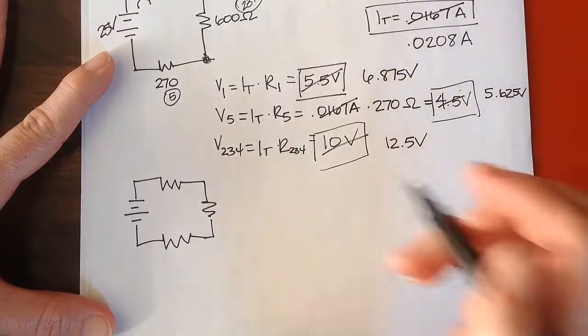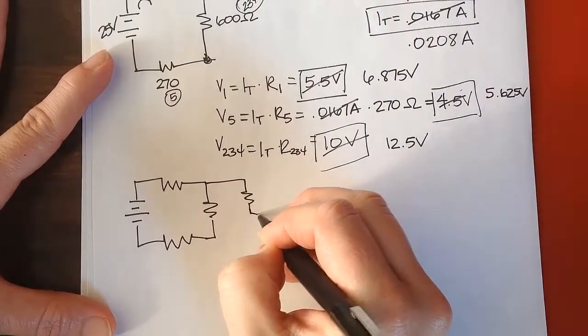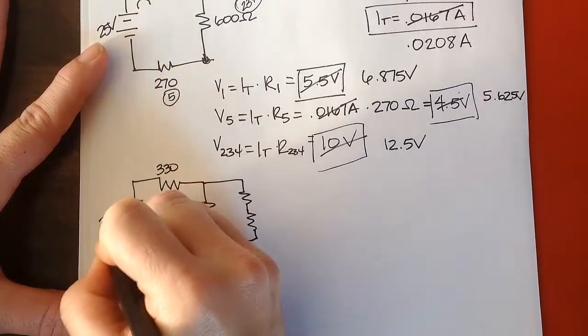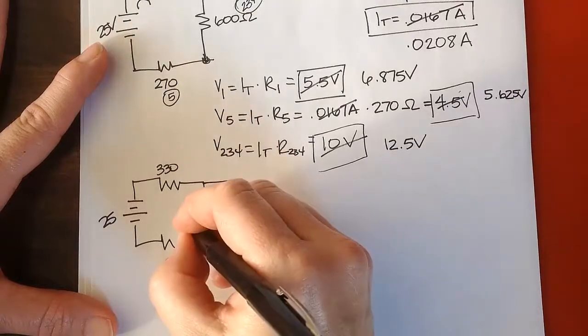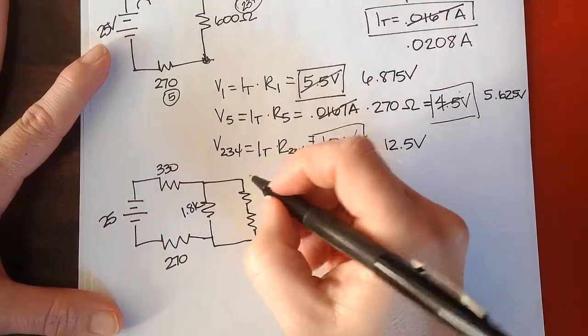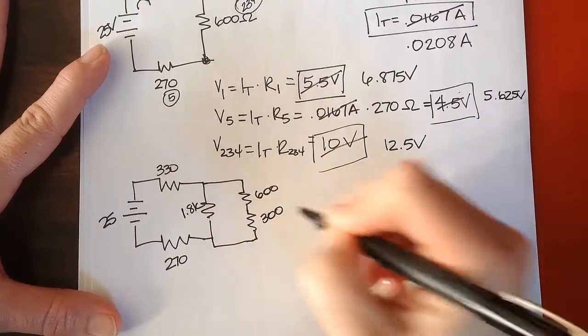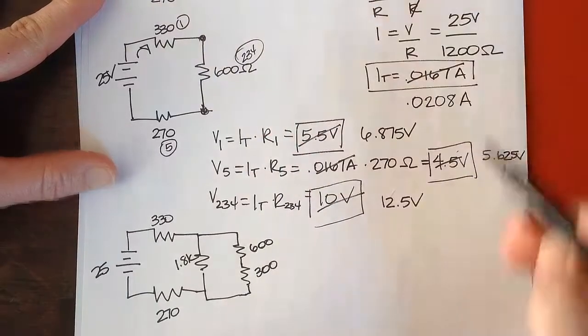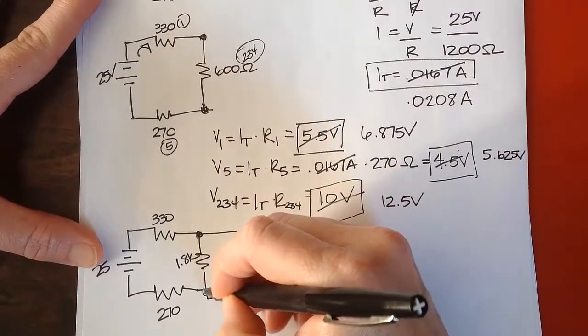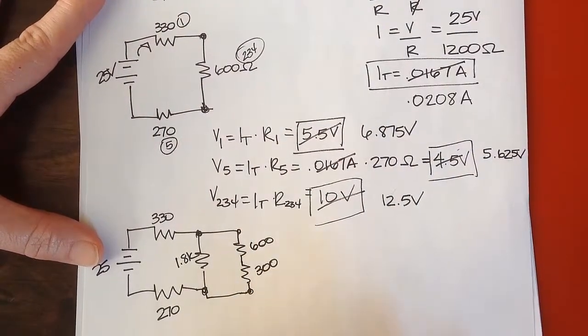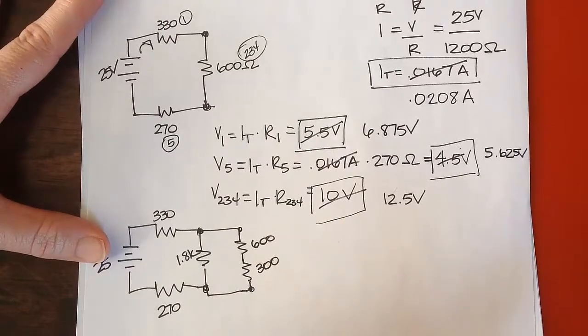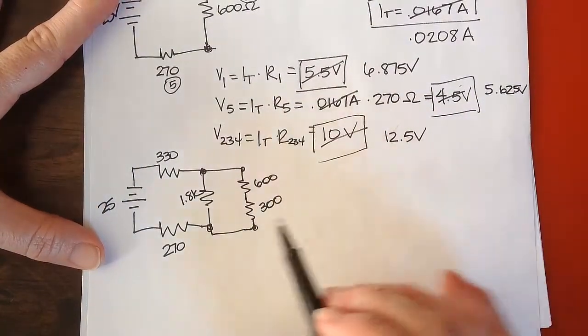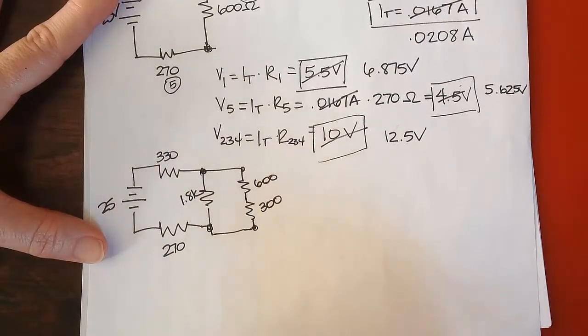And I'm actually going to go back to basically the very first circuit, because we can now completely solve it. And this is what we have. So 330, 25, 270, this is 1.8 kiloohms, this was 600 and 300. So now we know that the potential drop across this was 12.5 volts, which means the potential drop across here and across here is what? 12.5 volts, right? So since we know the voltage drop and we know the resistance in each branch, we can determine the current in each branch.